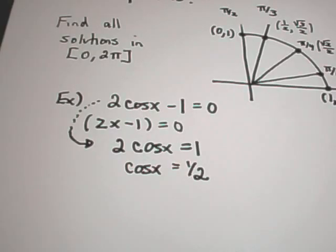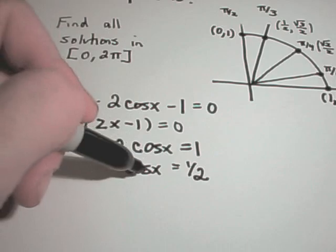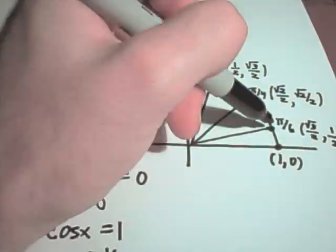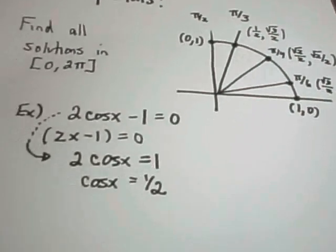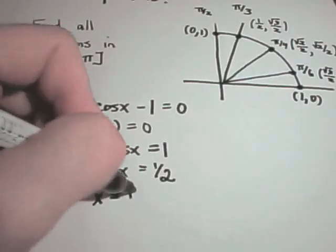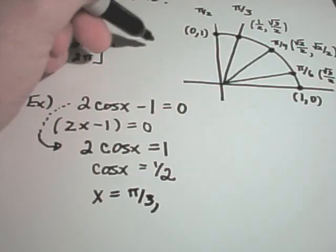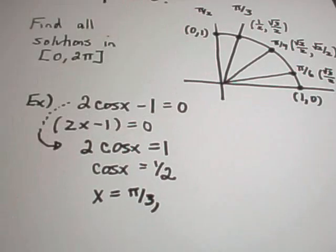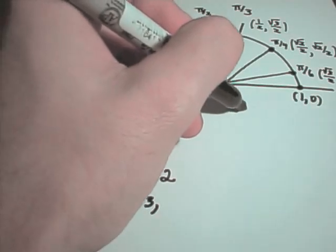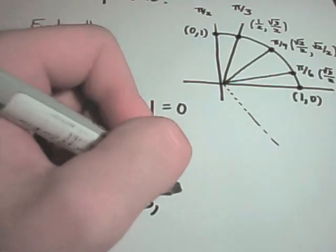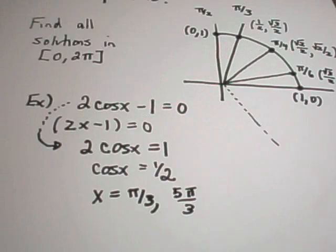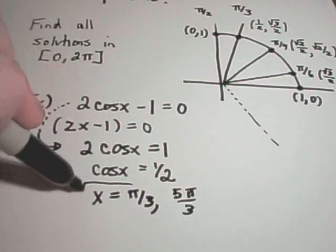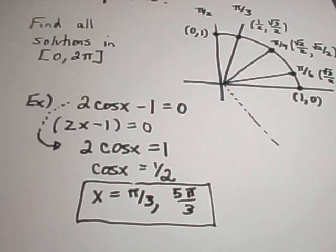Now I have to think about angles on the unit circle. Remember, cosine represents the x-coordinate. The first place where the x-coordinate is 1/2 is at the angle π/3. On the left side of the unit circle all x-coordinates are negative, so that won't work. But reflecting that angle down gives another solution: 5π/3, since the full circle is 2π = 6π/3, and going one π/3 less gives 5π/3. So our solutions are x = π/3 and x = 5π/3.